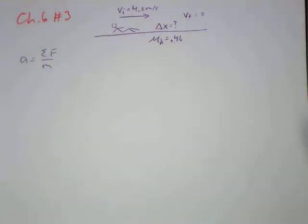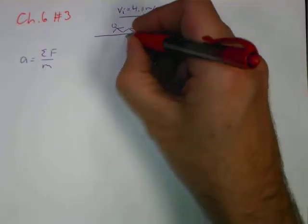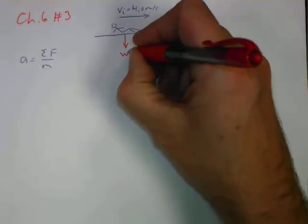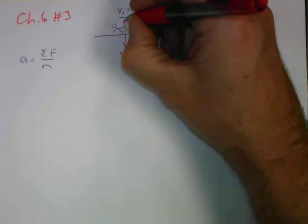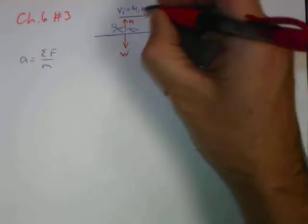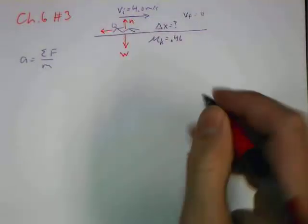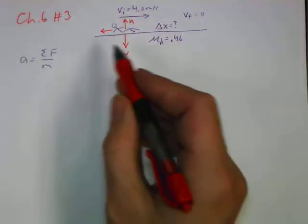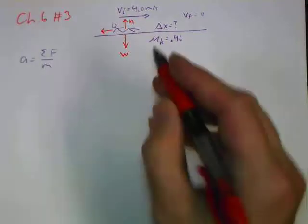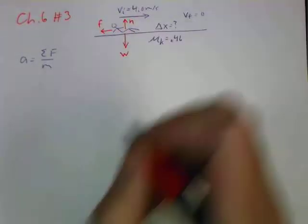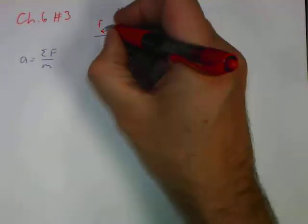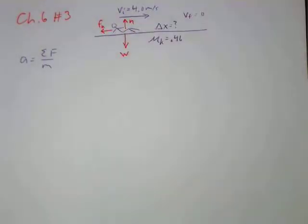Now, what forces do we have? Well, we, of course, have his weight downward. We have an equivalent amount of normal force upward. But more importantly, and those guys are going to cancel out and not do anything. In the interesting direction, the x direction, we have a frictional force going back in this direction. And, of course, that's a force of kinetic friction if we want to point the details out.